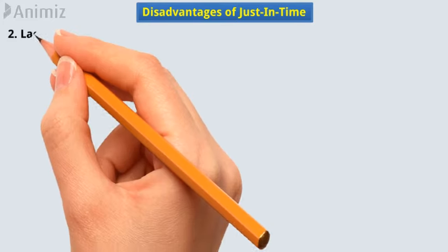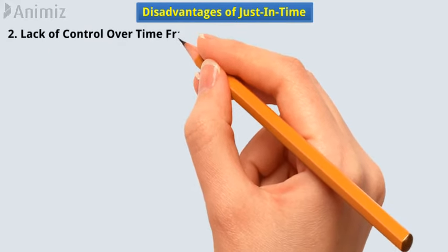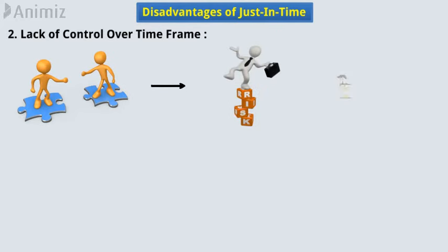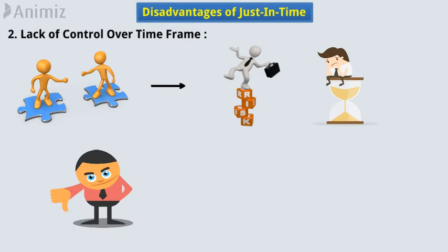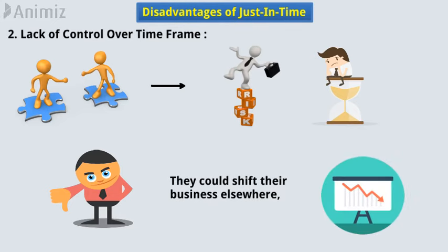2. Lack of control over time frame. Having to depend on the punctuality of suppliers for each order puts you at risk of delaying your customers' receipt of goods. If you don't satisfy your customers' expectations, they could shift their business elsewhere, which would have a massive impact on your business if this happens often.